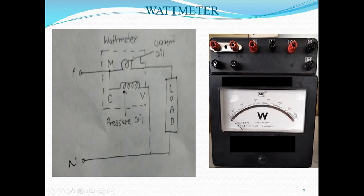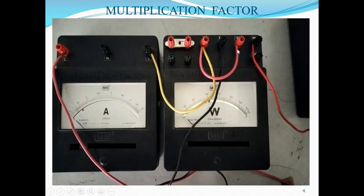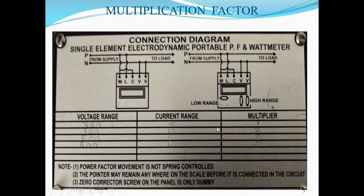If the plates are connected vertically, that shows the watt meter is used for high range purpose. Right now it is used for low range. The multiplication factor is also given on this watt meter. If the voltage range is 300 and current range is high — that is 5 ampere — then the multiplier is 1. Using the theoretical formula: 300 into 5 into 1, divided by 1500, equals 1. Similarly, for voltage range 300 and current range 10: 300 into 10 into 1, divided by 1500, equals 2.